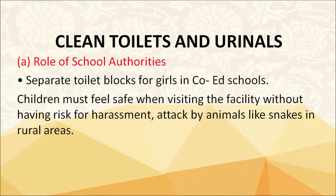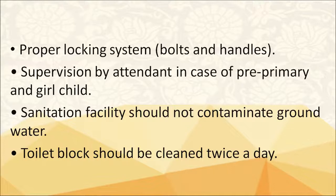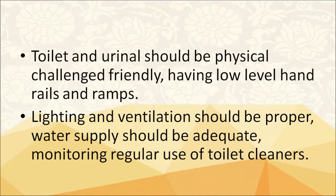There should be separate toilets for girls in co-ed schools. Children must feel safe when they visit the facility without risk of harassment or attack by animals like snakes in rural areas. Proper locking systems with bolts and handles and supervision by an attendant for pre-primary and girl children are necessary. Sanitation facilities should not contaminate groundwater. Toilet blocks should be cleaned twice a day. Toilets and urinals should be physically challenge friendly with low-level hand rails and ramps. Lighting, ventilation and adequate water supply should be proper. Toilet cleaners should be monitored for regular use.